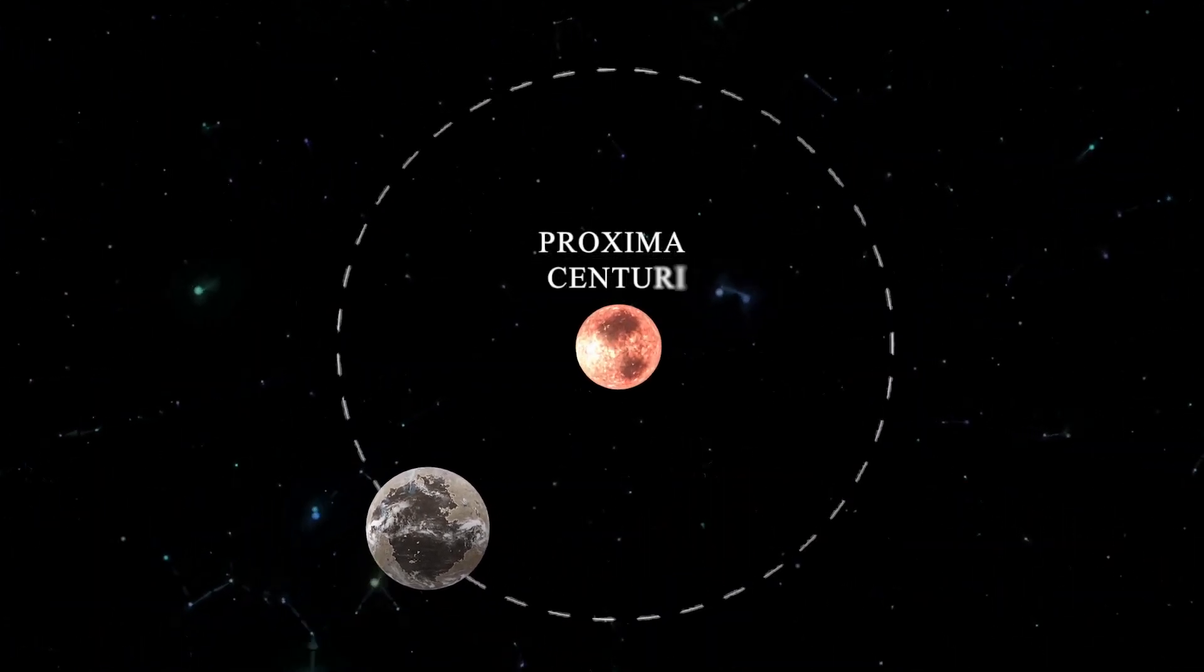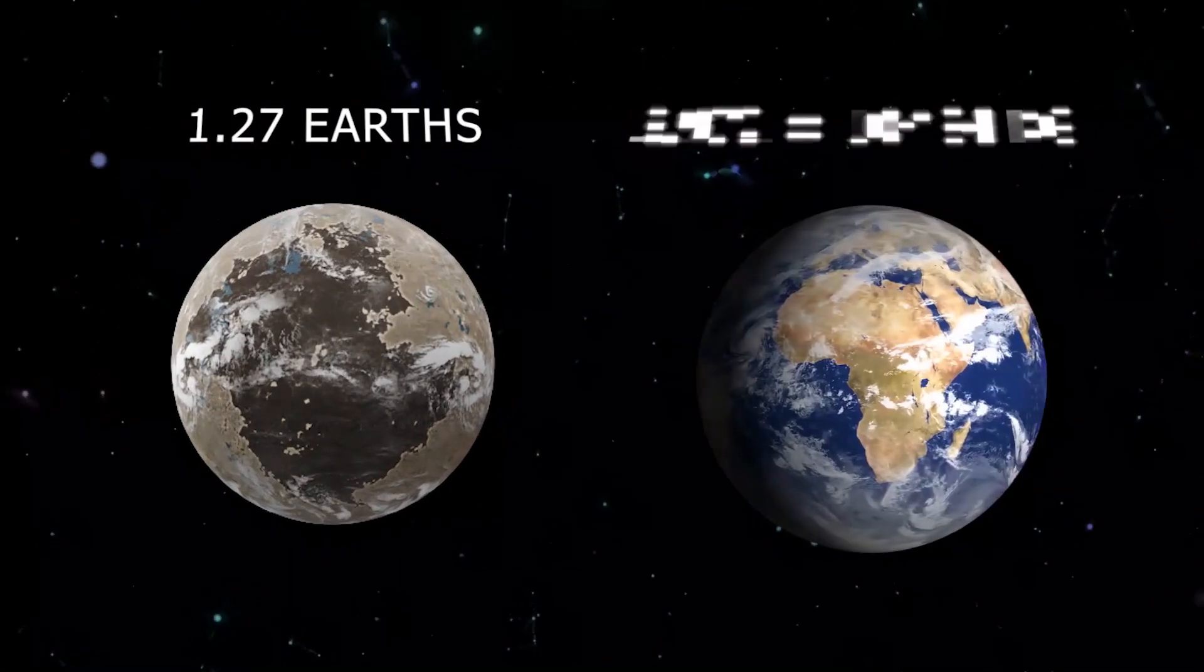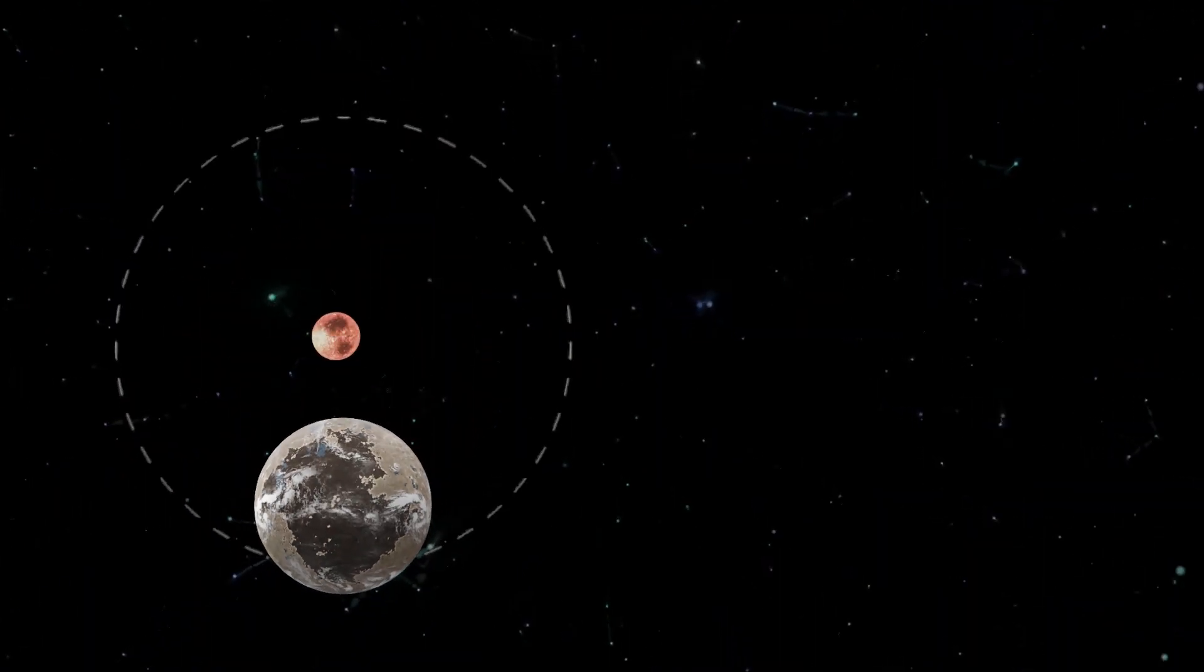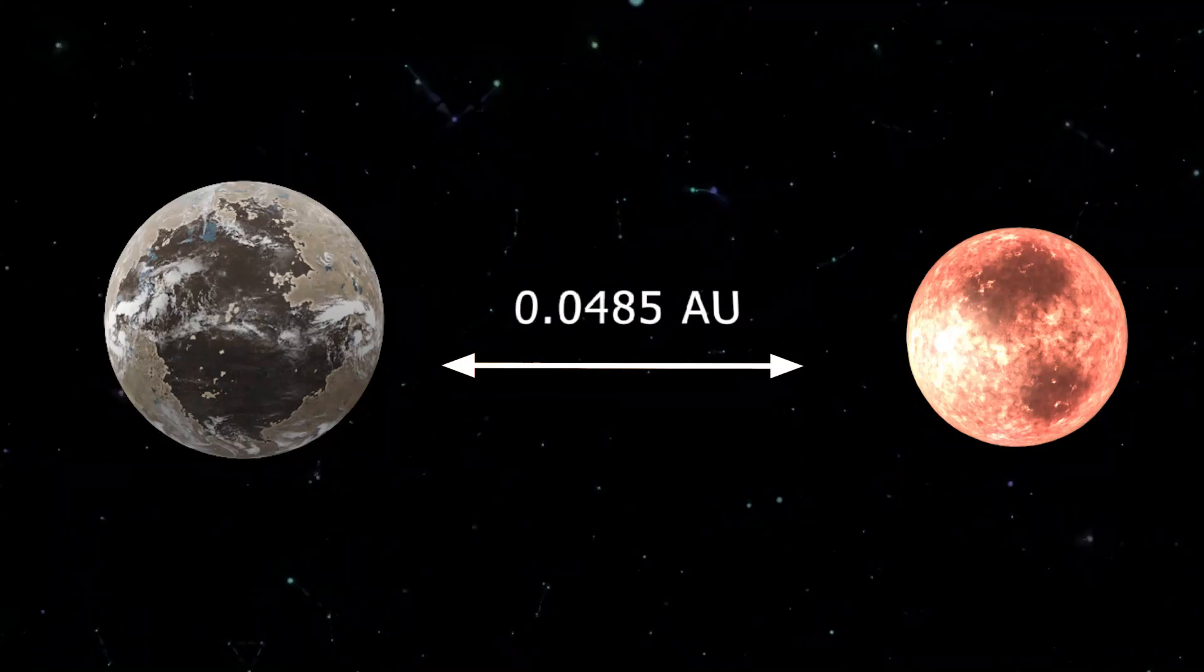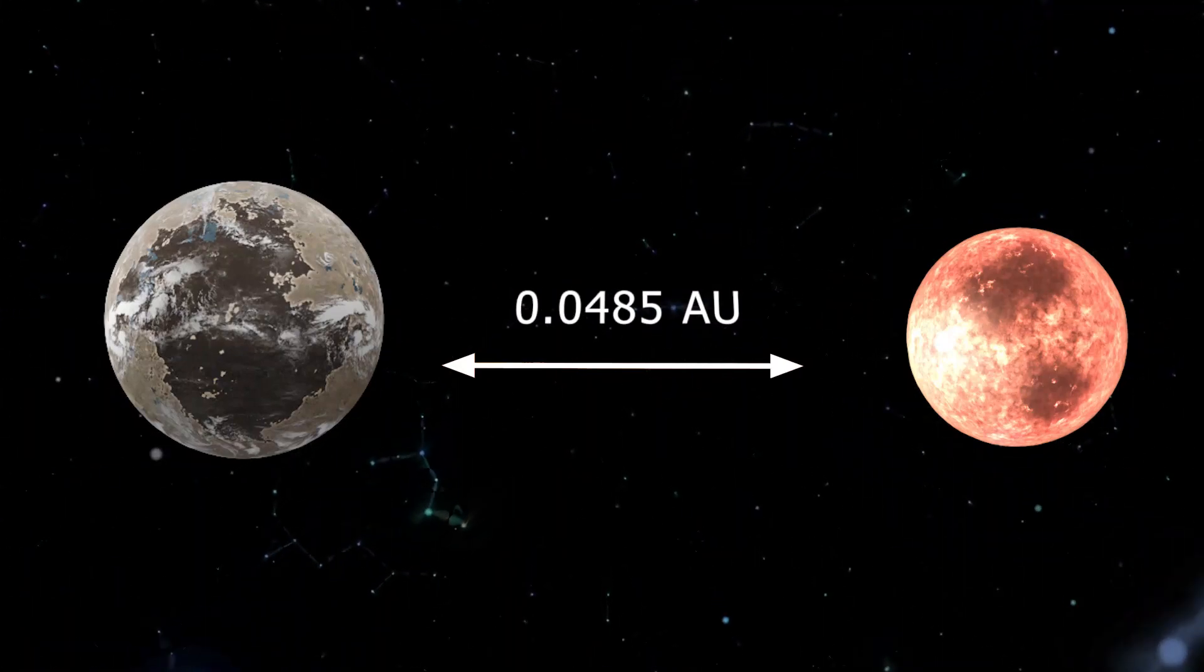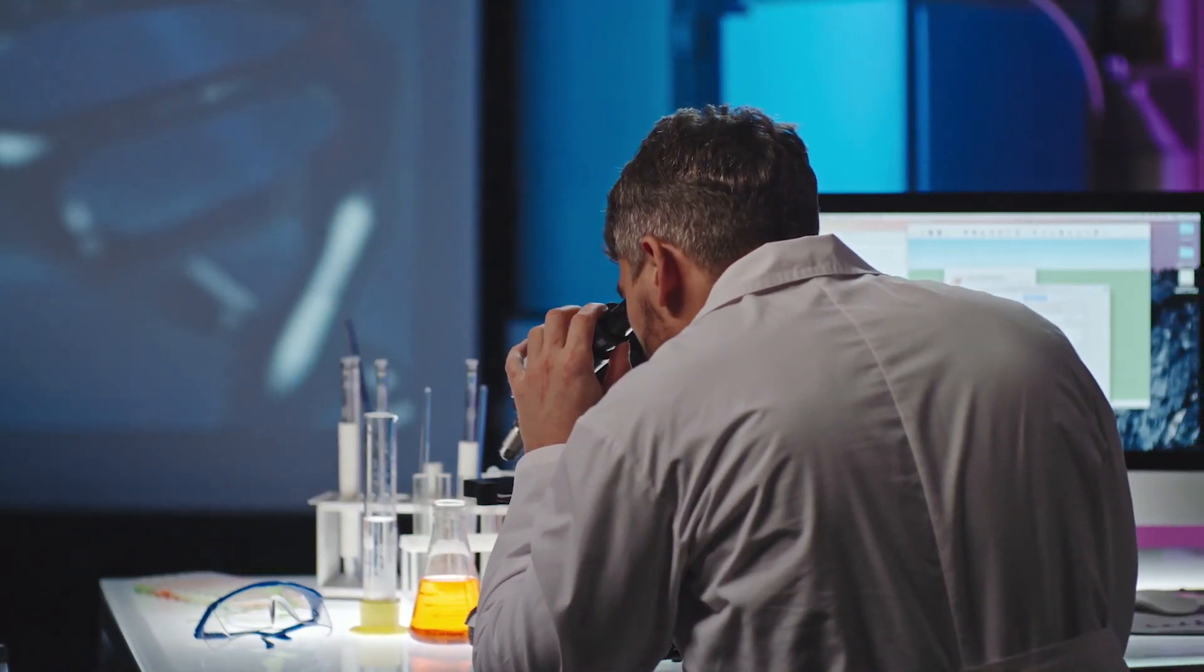Proxima b is a super-Earth exoplanet that orbits an M-type star. Its mass is 1.27 Earths. It takes 11.2 days to complete one orbit of its star, and it is 0.0485 astronomical units from its star.